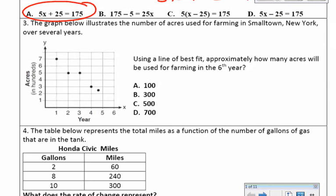Number 3: the graph below illustrates the number of acres used for farming in a small town in New York over several years. Using a line of best fit, approximately how many acres will be used for farming in the 6th year? First, draw your line of best fit through the center of most of the points. Then go to where the 6th year is on the graph, follow it up to where your line is, make a point there, and follow it across.